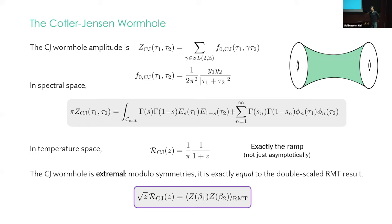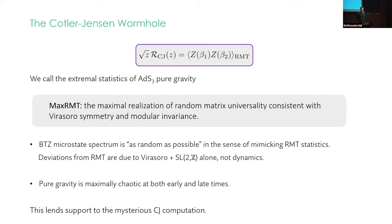In this sense, the Kotler-Jensen wormhole is extremal. So I mean this in a quantitative way. We've taken care of all the symmetries, Virasoro and SL(2,Z), and what's left is this free function R of Z, and it's exactly equal to the double scaled RMT result for the same quantity. So we call the extremal statistics of AdS3 pure gravity max RMT, which in other words is the maximal realization of random matrix universality that's consistent with Virasoro and modular invariance.